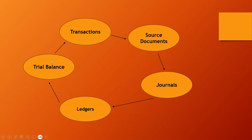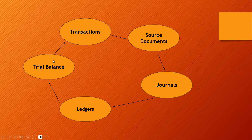In April we go again: transactions, source documents, journals, ledgers, and trial balance. Now the trial balance has two months in it because the opening balances are added to the current month — so we've got March and April. In May we do it again, so the trial balance now has three months. Then June gives us four months. Usually we have 12 months.